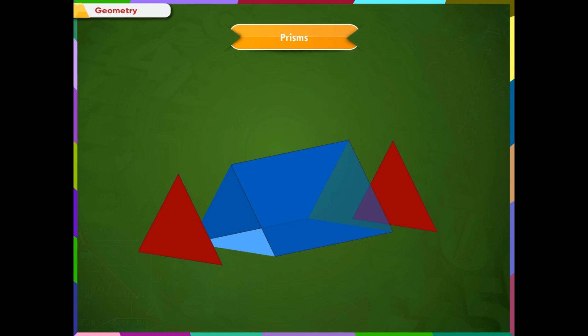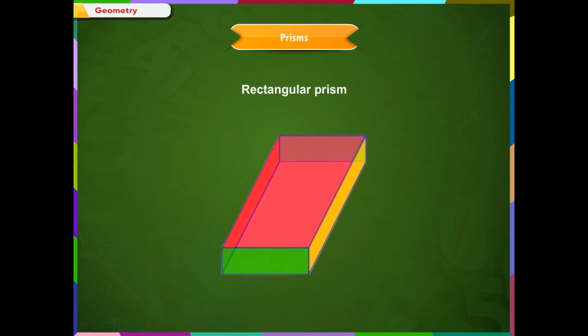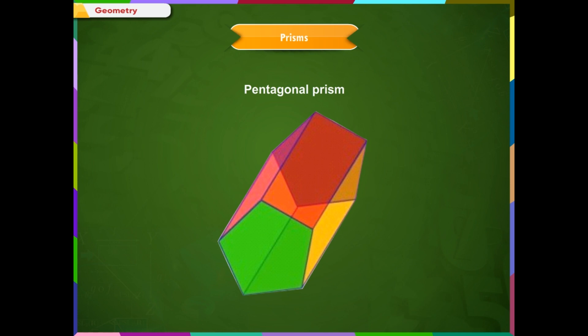The prism is named by the shape of its base. If the base is triangular in shape, it is called a triangular prism. If the base is rectangular in shape, it is called a rectangular prism. And if the base is a pentagon, it is called a pentagonal prism.